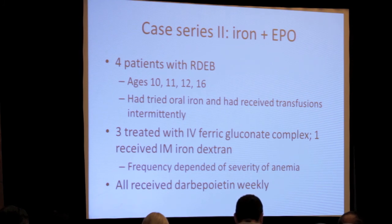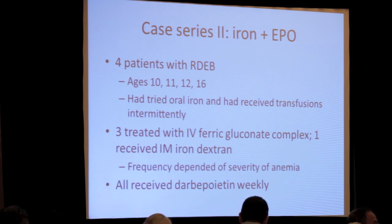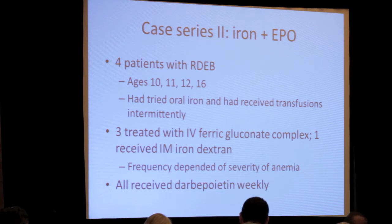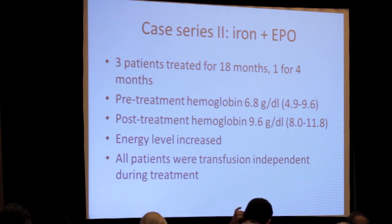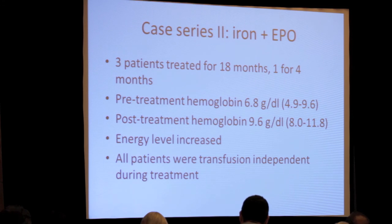A final case series of four patients who had tried oral iron therapy or transfusions and were failing to maintain hemoglobin were given two different forms of IV iron and a longer-acting form of erythropoietin. Average hemoglobin tended to be around 7 before treatment and went up close to 10 with response to treatment. Patients subjectively felt their energy level was better and did not require transfusions during the time of treatment with IV iron.